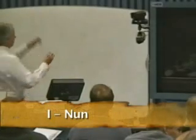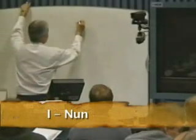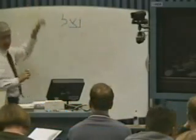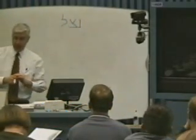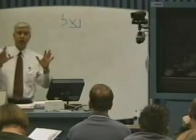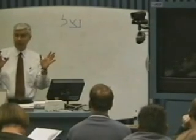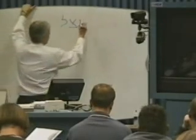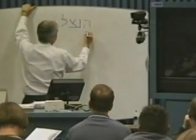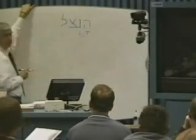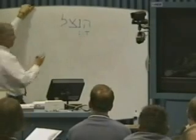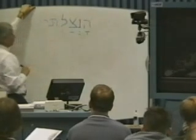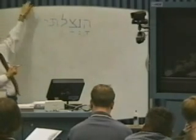If this were, in fact, the root Natsal, and we wanted to make this a Hofal — simply because that's what this lesson is about, and that'd be a good guess — how would you make it a Hofal? You'd do this to it, right? And then you'd have the rest of your verb form by the book: Hansalti.